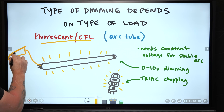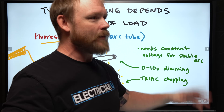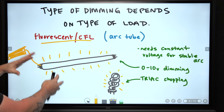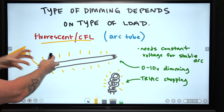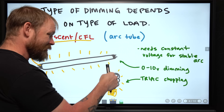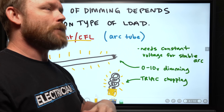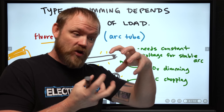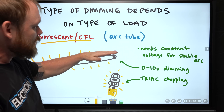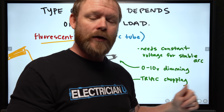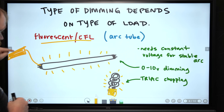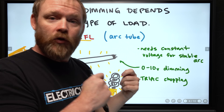With typical fluorescents, you usually have some kind of external ballast - a rapid start ballast, two-lamp or four-lamp - usually an electronic ballast, though old magnetic ballasts work similarly. Many CFLs are self-ballasted, meaning ballast technology is integrated into the lamp itself. Others have externally operable ballasts. Typically with fluorescent, we deal with zero-to-10-volt dimming, which means we can't change the current or voltage from the power source powering the lamp, because it needs a stable current to keep the lamp glowing.